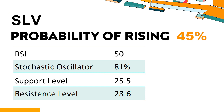SLV has a 45% probability of rising stock price, meaning the probability of falling is relatively high. Combining multiple technical analysis indicators, SLV has two bullish signals and five bearish signals. SLV's short-term support level is 26.1; if it falls below 26.1, it will have a chance to test 25.5. The short-term resistance level is 28; if it breaks through 28, it will look up to 28.6.